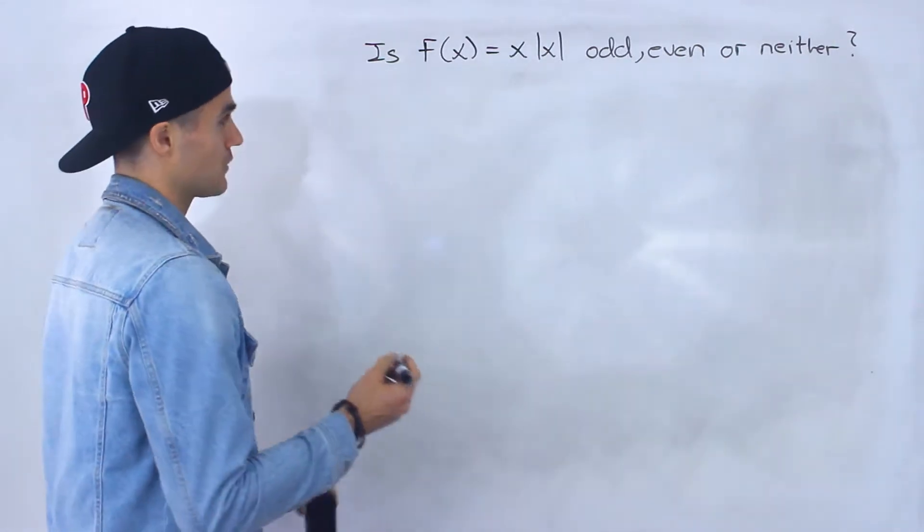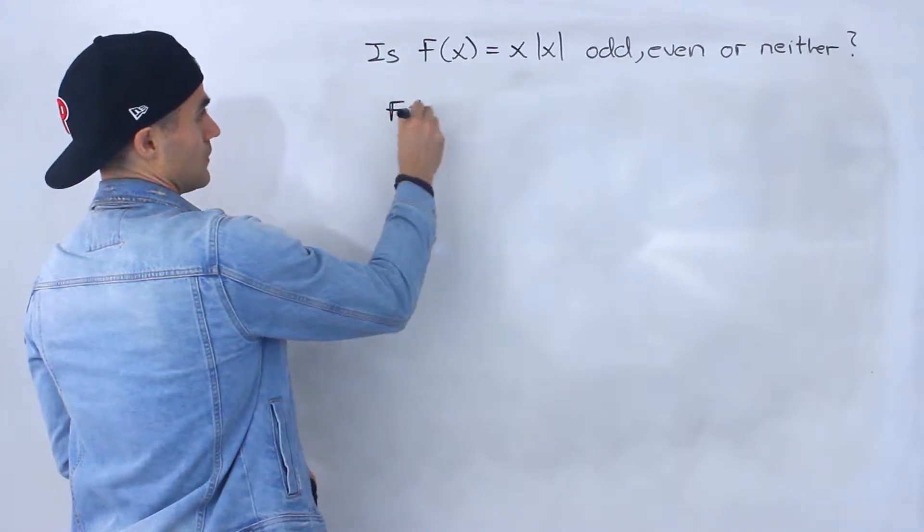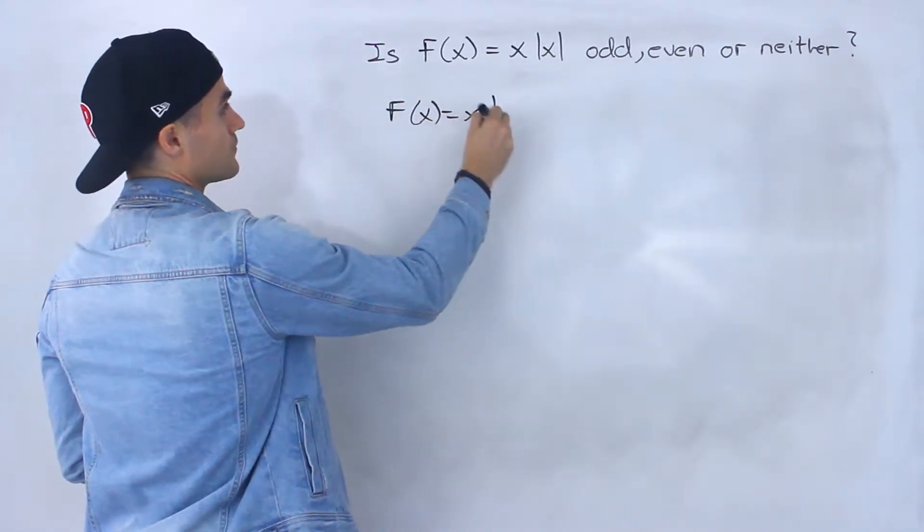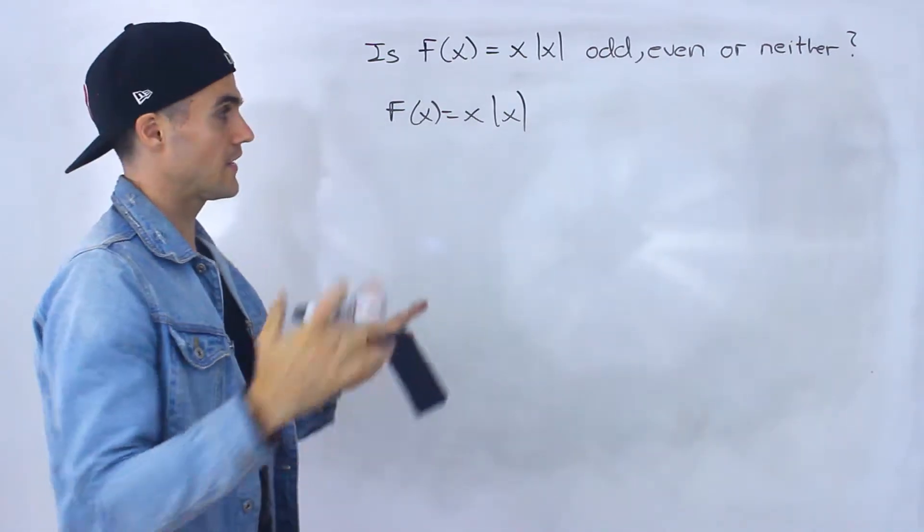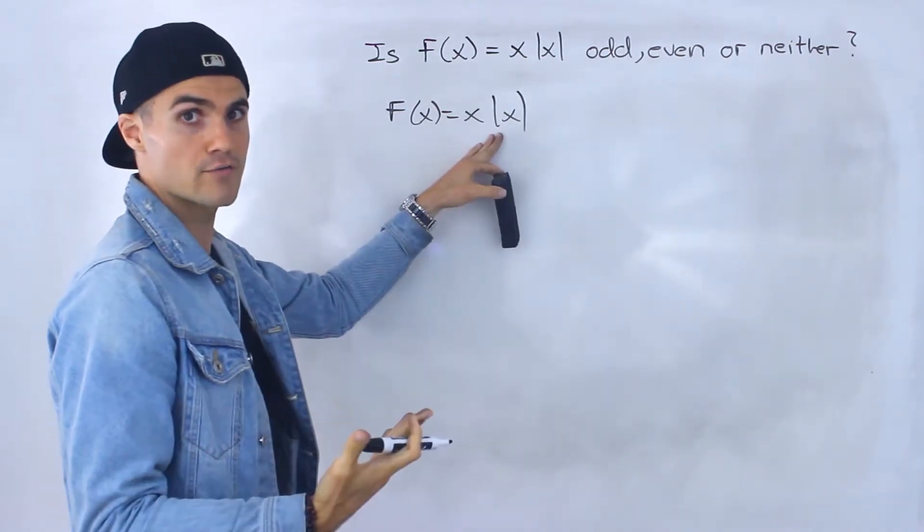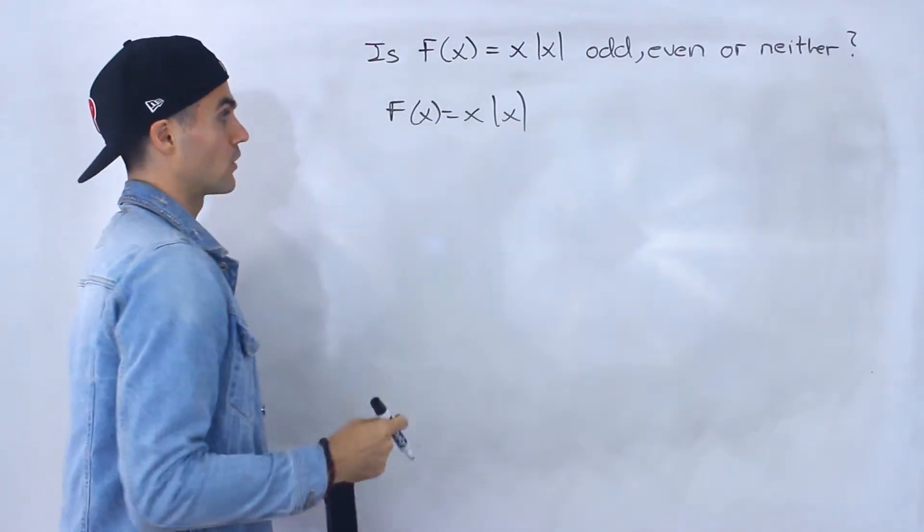So we haven't dealt with a function like this yet so let me rewrite the function here. What I'm gonna do is I'm gonna show you algebraically how it works and then I'm gonna show you graphically. We're gonna take this function and graph it and then we can see graphically whether it's even, odd, or neither.